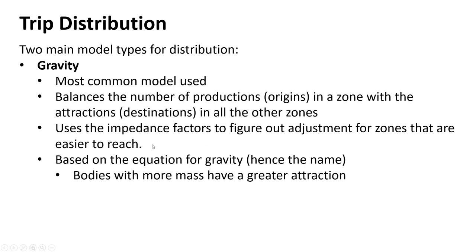The Gravity model uses impedance factors — in the Logit model they're embedded in utility functions, but in the Gravity model they're more explicitly calculated for each zone pair. The formulation resembles Newton's gravitational equation: F = G × M₁ × M₂ / d², where mass and distance are the key factors.